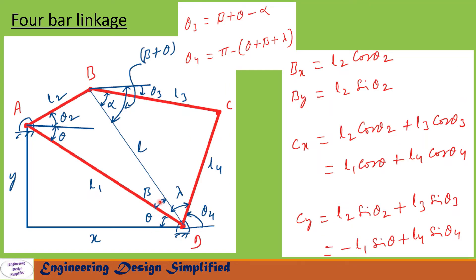The angle from the fixed-link line to the diagonal BD is theta plus beta. The angle from the diagonal to link BC is alpha, and from link BC to the horizontal is theta3, so theta3 equals beta plus theta minus alpha. Since all other angles are taken counterclockwise positive, if theta3 is clockwise we apply a negative sign. For theta4, the straight line gives 180 degrees, so theta4 equals 180 minus (theta + beta + lambda).